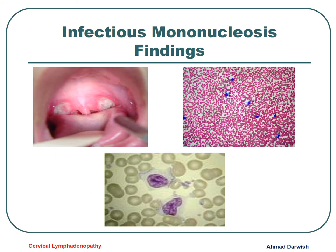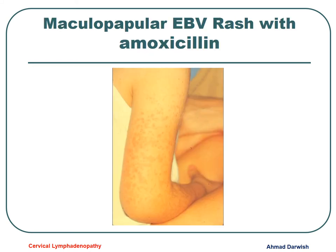These photos show the exudate on the pharynx and the atypical lymphocytes in the blood film, and this is the rash of the skin that can occur after giving amoxicillin in 80% of patients.